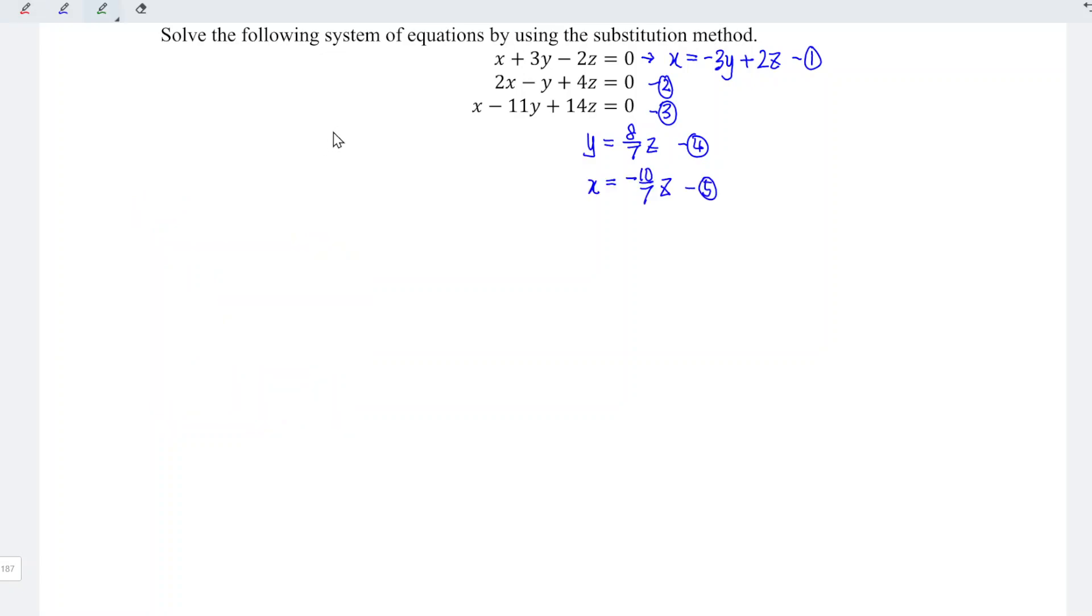Lastly, let's substitute equation 4 and equation 5 into equation number 3. We have x which is minus 10 divided by 7z, minus 11y. Y is equal to 8 over 7z, and we plus 14z is equal to 0. Again, let's standardize to calculate this. We have 7, 7.